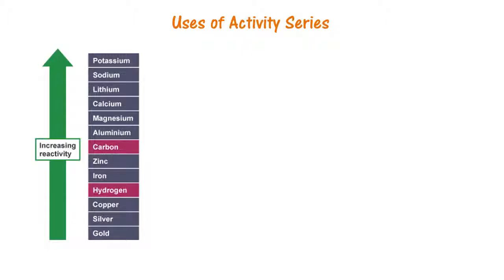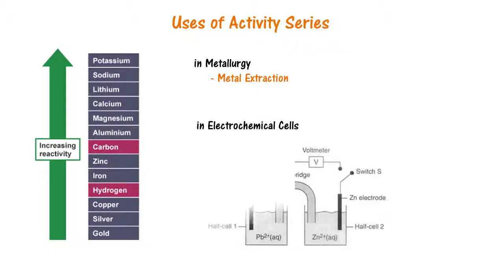The activity series is very useful and is used in metallurgy for metal extraction, in electrochemical cells, and to predict redox reactions. We will learn more about these in other chapters.